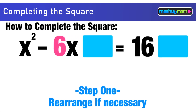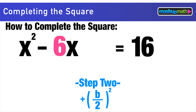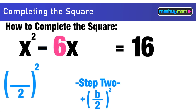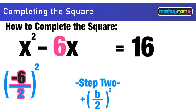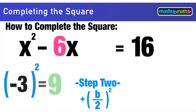Leave open spaces in the equation to use later. Step two for completing the square is to add (b/2)² to each side. We take the b term, divide by 2, then square it and add to both sides. Here b = -6, so -6÷2 = -3, and (-3)² = 9. We add 9 to both sides.